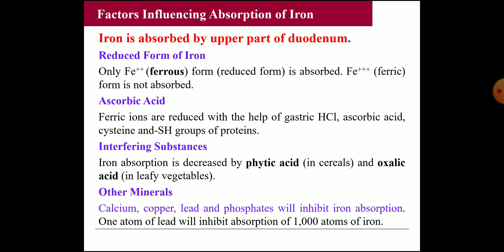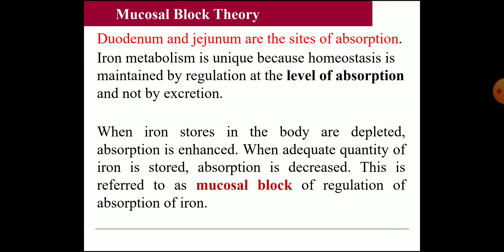One atom of lead can inhibit the absorption of a thousand atoms of iron. Absorption mainly takes place in the duodenum and jejunum. Iron metabolism is unique in that homeostasis is maintained by regulation at the level of absorption, not at the level of excretion. When iron stores are decreased, absorption is enhanced; when adequate iron is stored, absorption is decreased. This is referred to as the mucosal block regulation of iron absorption.